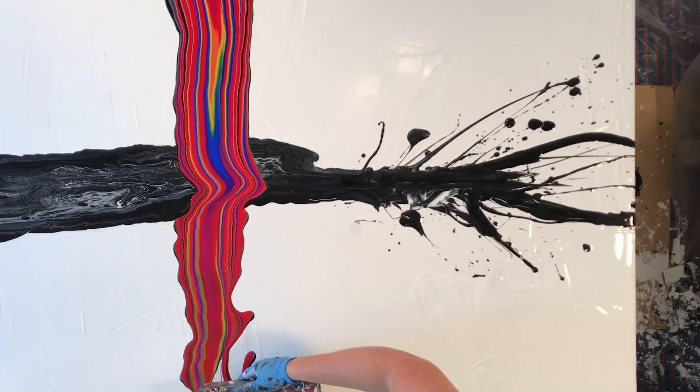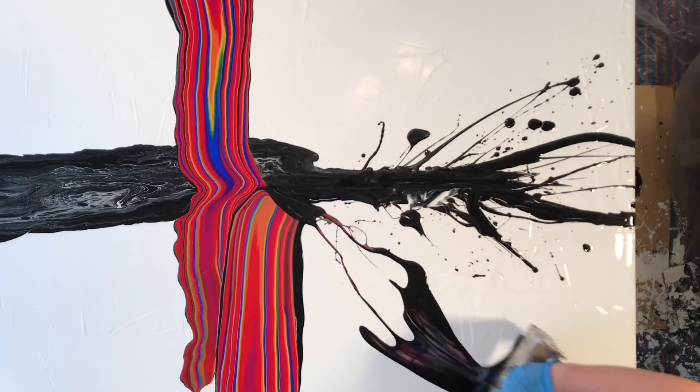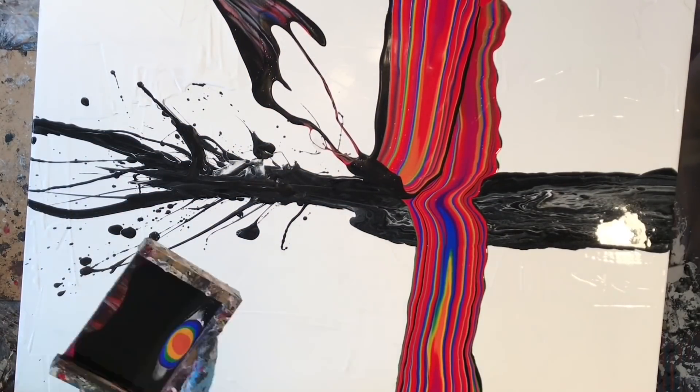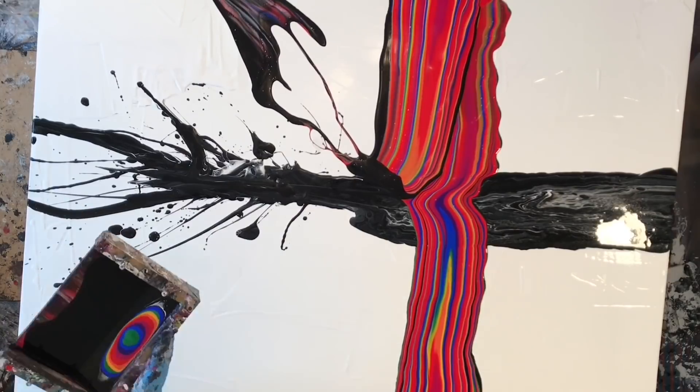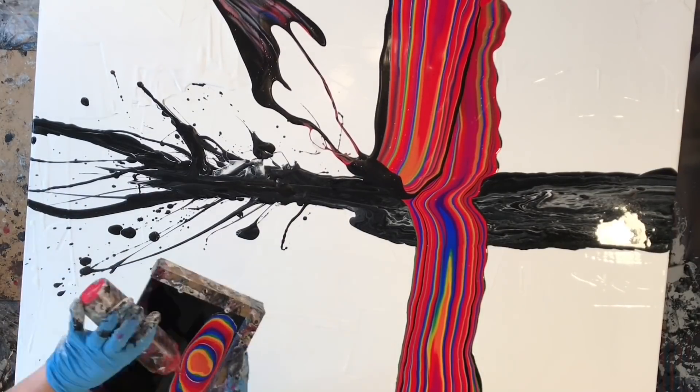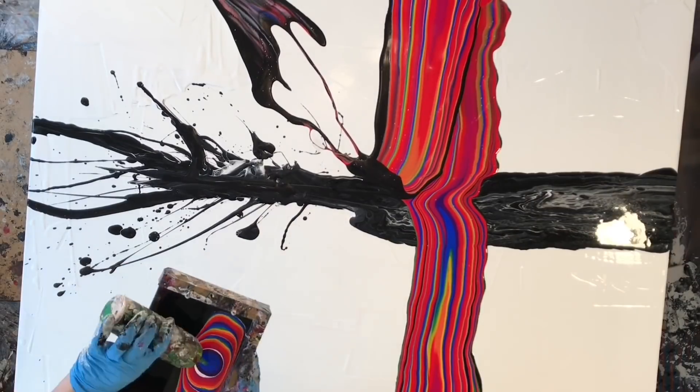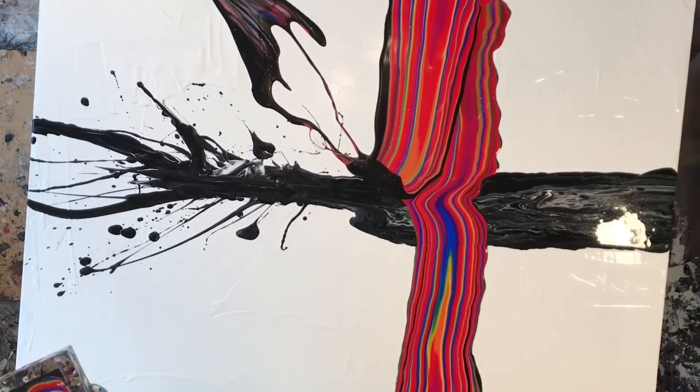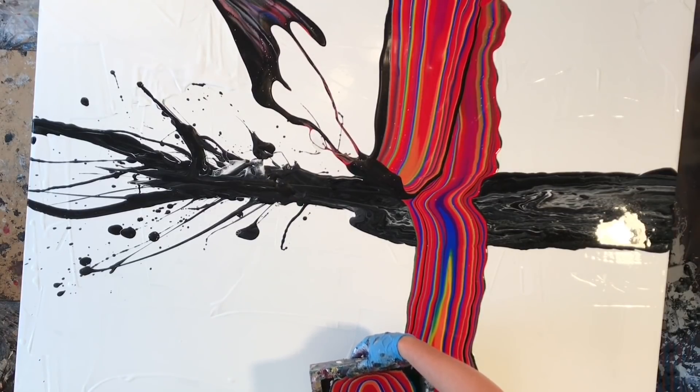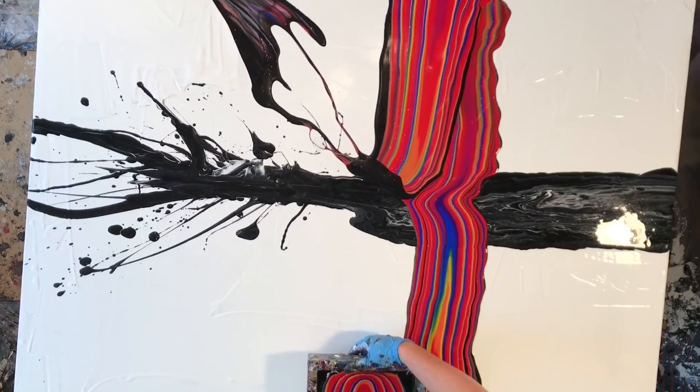So the whole concept is that the black is coming through and then it kind of like busts through the rainbow thing and it broke up the rainbow and the black got all messed up. I don't know, I think that it actually turned out almost exactly what it looked like in my head, which is pretty unusual.